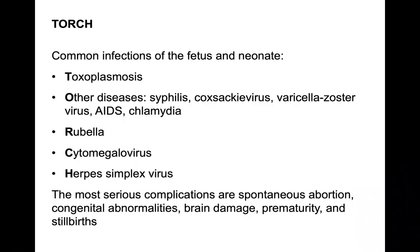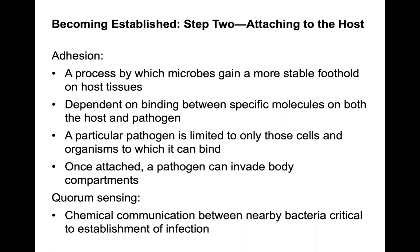Common infections to the fetus and neonate are what we look for in a TORCH panel, which all pregnant women go through. TORCH includes toxoplasmosis; other diseases such as syphilis, coxsackievirus, varicella zoster virus, HIV, and chlamydia; rubella; cytomegalovirus; and herpes simplex. The most serious complications are spontaneous abortions, or if the fetus survives, congenital abnormalities, brain damage, premature births, and stillbirths.